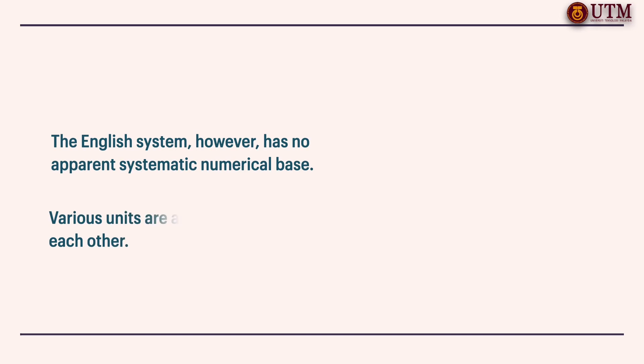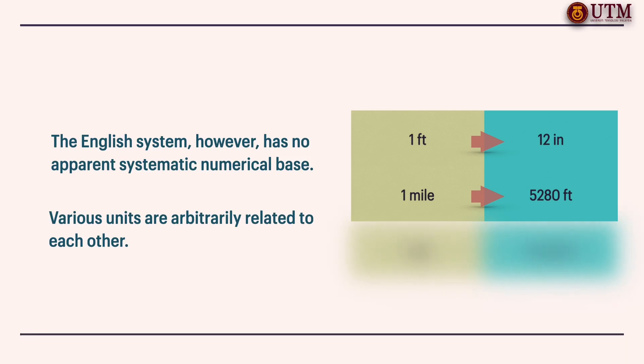Whereas, the English system has no apparent systematic numerical base and various units in the system are related to each other rather arbitrarily, which makes it confusing and difficult to learn. For example, 1 foot is equal to 12 inches, 1 mile is equal to 5,280 feet and 1 gallon is equal to 4 quarts.